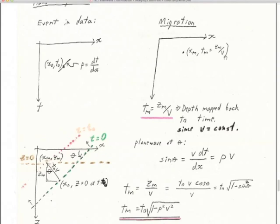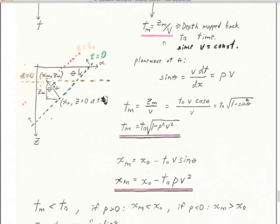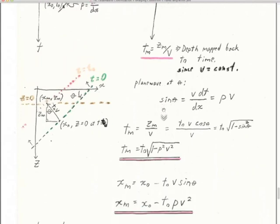That was the convention for years. Now most stuff is in time except for high-priority areas where they're trying to get depth, and then they do a depth migration with log data too. So there are still lots of time sections around. But when you really have to focus in on a difficult problem, that's when you start calculating depth sections. The problem is if you give depth sections to people who don't understand the uncertainty, you keep it in time until you're pretty sure — you don't want them to imagine you've got the depth right yet.